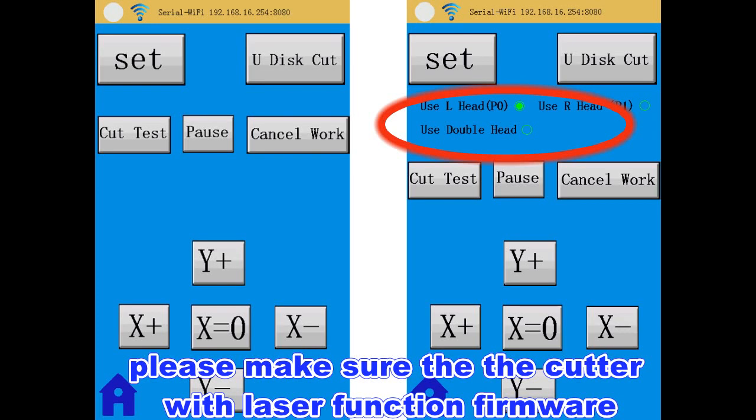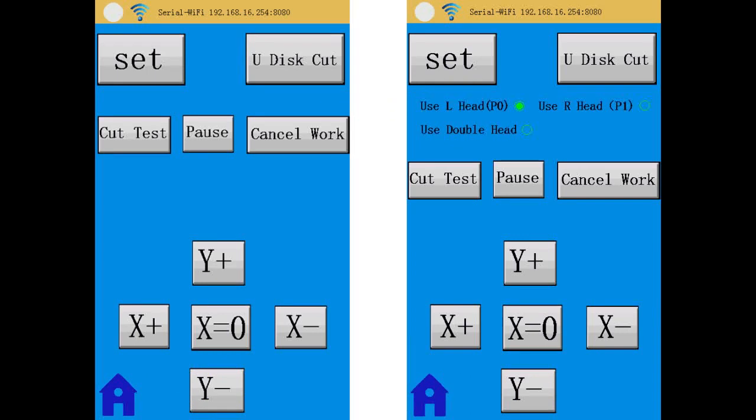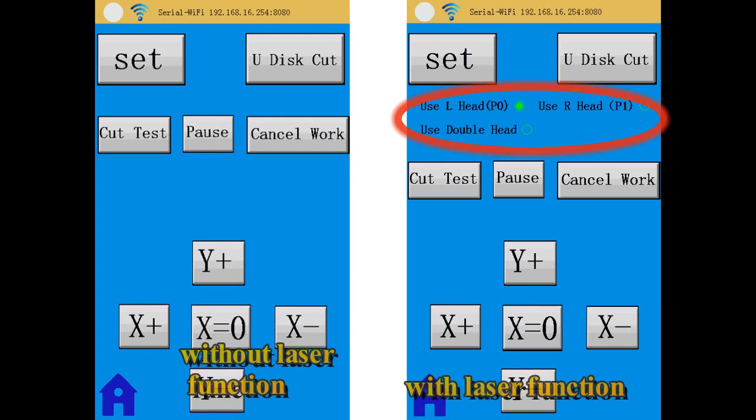On the cutter menu, press motor set. You will see this menu. The menu on the left is the firmware without laser function, and the menu on the right is the firmware with laser function.